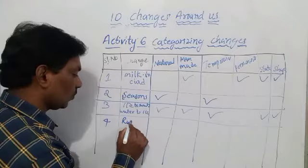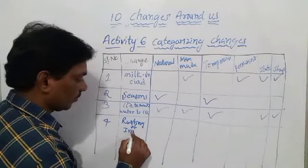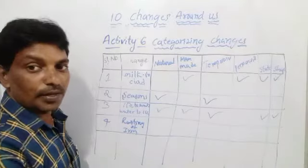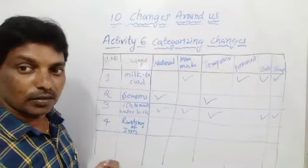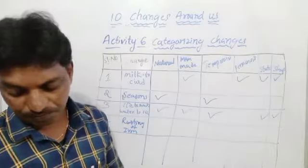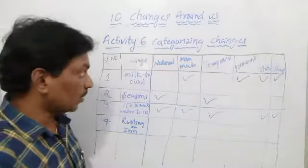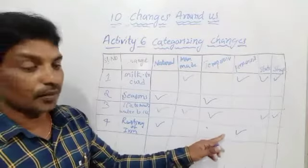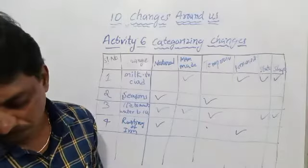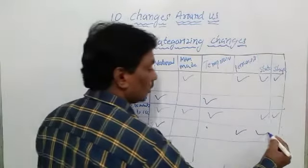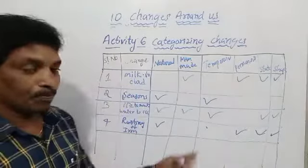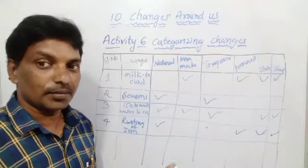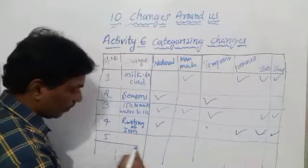The fourth example is rusting of iron. It is a natural change and it is a permanent change — it will not come back. In nature it occurs naturally. State and shape also change because due to rusting the iron breaks and collapses, so the state and shape are going to change.